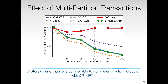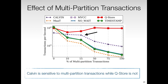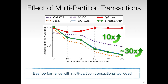In this experiment, we study the effect of multi-partition transactions in the workload. We compare QStore against Calvin and non-deterministic protocols such as no-wait, MAT, MVCC, and timestamp. Non-deterministic protocols use two-phase commit for committing distributed transactions. With 0% multi-partition transactions in the workload, non-deterministic protocols do not perform two-phase commit, so their performance is high. Yet, QStore's performance is comparable to them. Despite the deterministic nature of Calvin, its throughput decreases as the rate of multi-partition transactions increases. This result shows that Calvin is sensitive to multi-partition transactions while QStore is not. QStore can achieve 10 times the performance of Calvin and nearly 30 times the performance of no-wait.